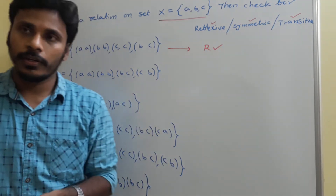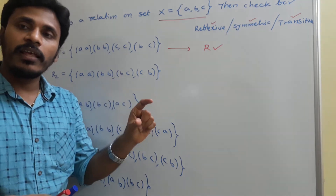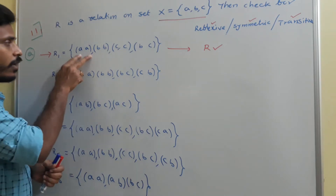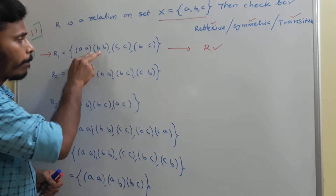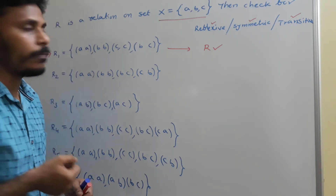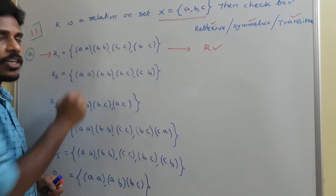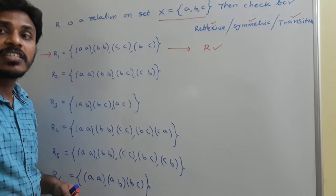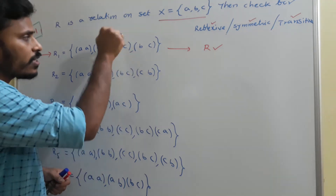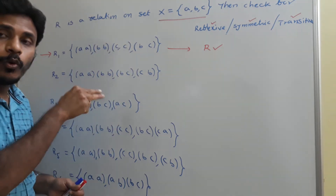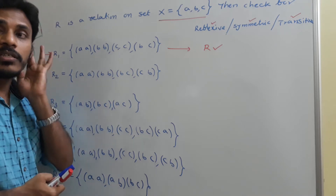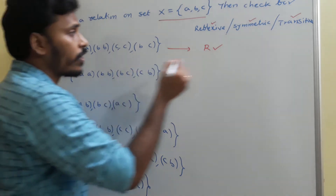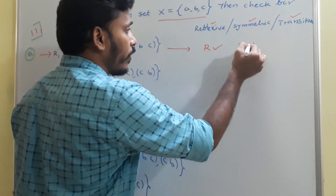Then for symmetric: if (x, y) is there, we need to search for the interchanged element (y, x). (a,a) interchanged is (a,a) — present. (b,b) interchanged is (b,b) — present. (c,c) interchanged is (c,c) — present. But (b,c) interchanged becomes (c,b), and (c,b) is not there in r1. So this first relation is not symmetric.